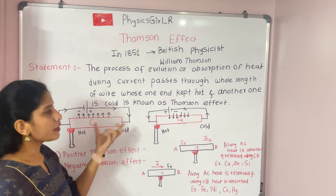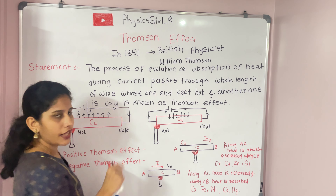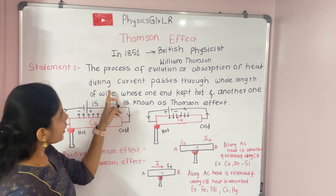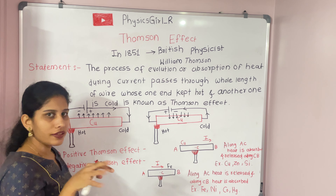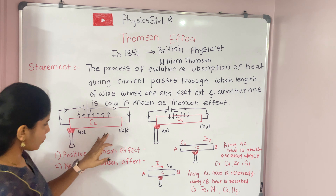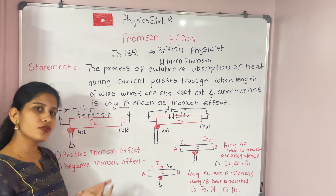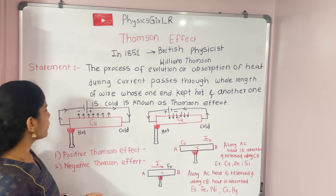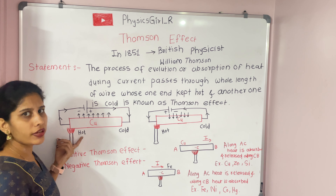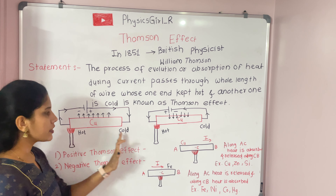Now let us interpret the statement of the Thomson effect. It is a thermodynamic process involving evolution or absorption of heat at the ends of a conductor. Consider a copper wire — copper is a metal and a good conductor of heat and electricity. One end of this copper wire is heated with the help of a burner, so that end is hot and the other end is cold.